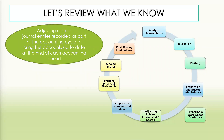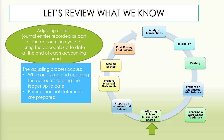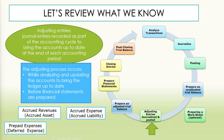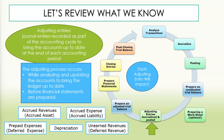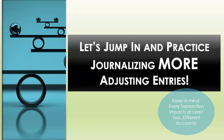Adjusting entries are defined as journal entries recorded as part of the accounting cycle to bring the accounts up to date at the end of each accounting period. The adjusting process occurs while analyzing and updating the accounts to bring the ledger up to date. This occurs before financial statements are prepared. What needs to be adjusted? Accrued revenues, accrued expenses, prepaid expenses, depreciation, and unearned revenues. Keep in mind, each adjusting entry will impact both the balance sheet and the income statement.